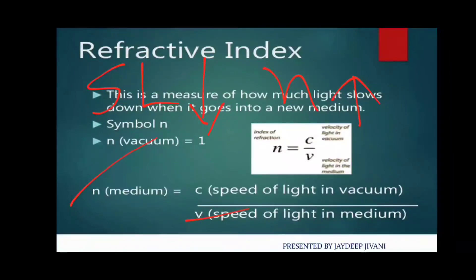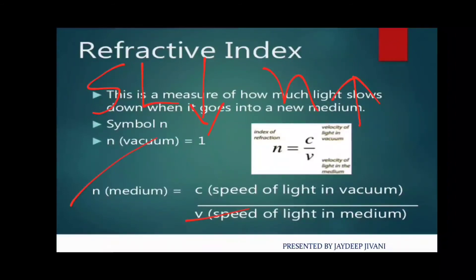The refractive index n is inversely proportional to the speed of light in the medium. So for water or glass, when the speed of light in the medium is low, the refractive index is high — speed of light and refractive index are opposite to each other.